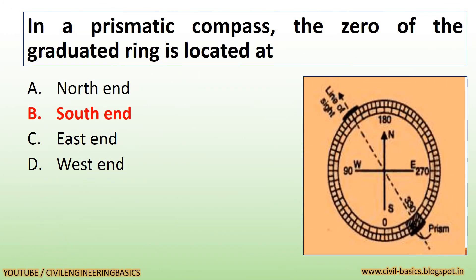In a prismatic compass, the zero of the graduated ring is located at the south end.